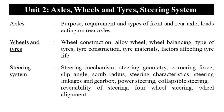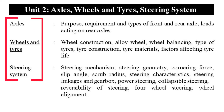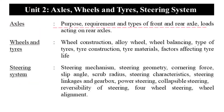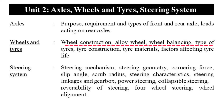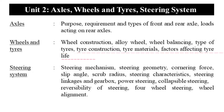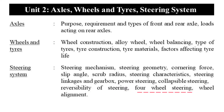The second unit is Axles, Wheels, and Tires, and Steering System. We study the purpose, requirements, and types of front and rear axles, loads acting on rear axles, wheel construction, alloy wheels, wheel balancing, types of tires, tire construction, tire materials, and factors affecting tire life. The steering system covers steering mechanism, steering geometry, cornering force, slip angle, scrub radius, steering characteristics, steering linkages and gearbox, power steering, collapsible steering, reversibility of steering, four-wheel steering, and wheel alignment.